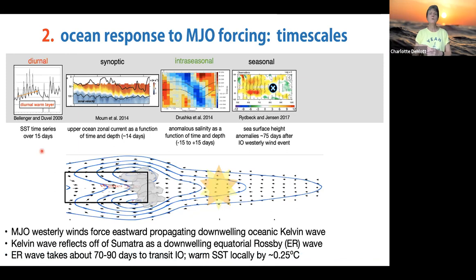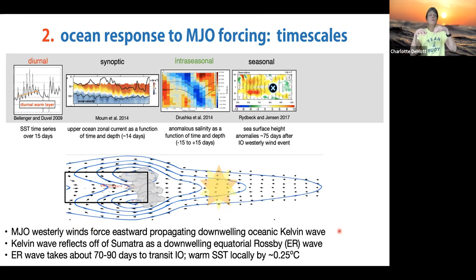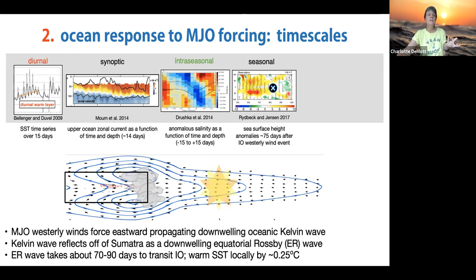On seasonal timescales, this figure from Rydbeck and Jensen (2017) shows sea surface height anomalies roughly 75 days after a westerly wind burst occurred. The westerly winds to the west of MJO convection force an eastward-propagating downwelling oceanic Kelvin wave along the equator. When this wave reaches Sumatra, it reflects as a westward-propagating pair of equatorial Rossby waves in the ocean. These oceanic waves take roughly 70 to 90 days to transit the Indian Ocean—an example of how the ocean responds to MJO forcing on a seasonal timescale.